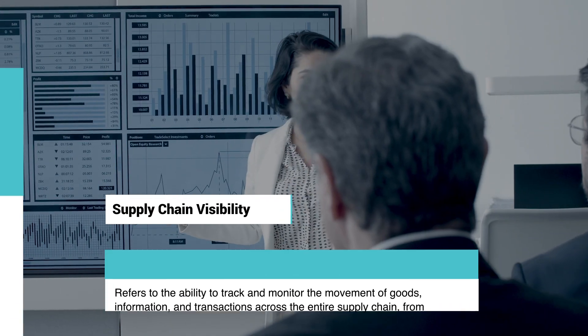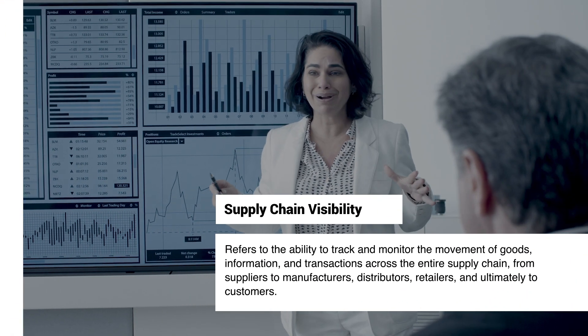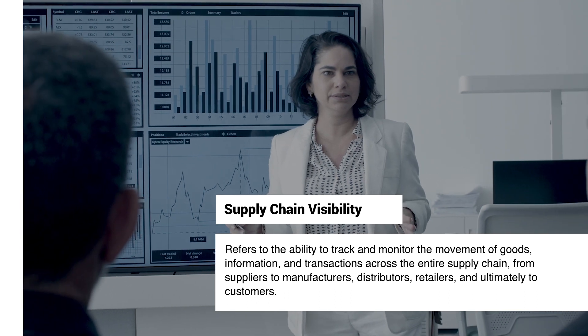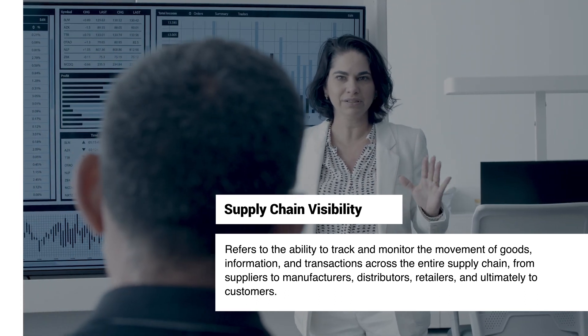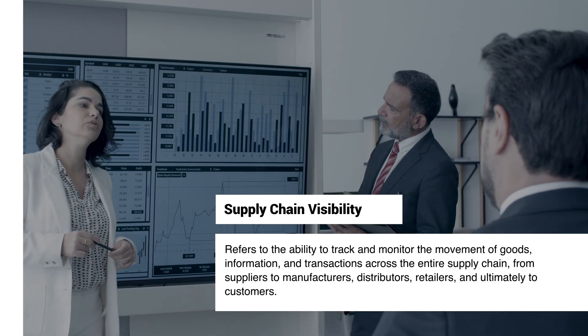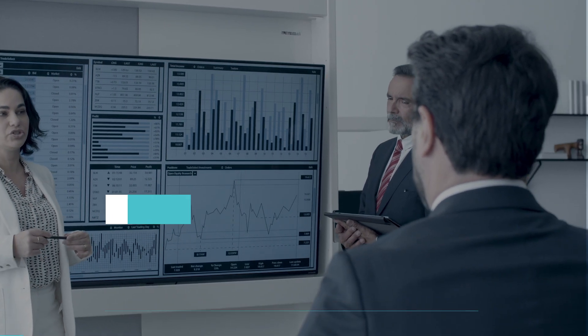Supply chain visibility refers to the ability to track and monitor the movement of goods, information, and transactions across the entire supply chain, from suppliers to manufacturers, distributors, retailers, and ultimately to customers.